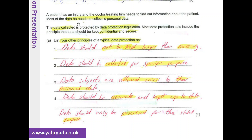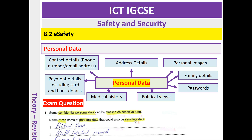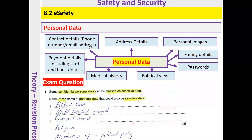Here's a data protection question: a patient has an injury and a doctor treating him needs to find out information about the patient. Most of the data collected is personal data, which is protected by data protection laws. List four other principles of a typical data protection act: data should not be kept longer than necessary; data should be collected for a specific purpose; data subjects are allowed access to their personal data; and data should be kept accurate and up to date and only processed for the stated purpose. Examples of personal data include contact details, address, personal images, family details, passwords, political views, medical history, and payment details including bank, credit card, and debit details.